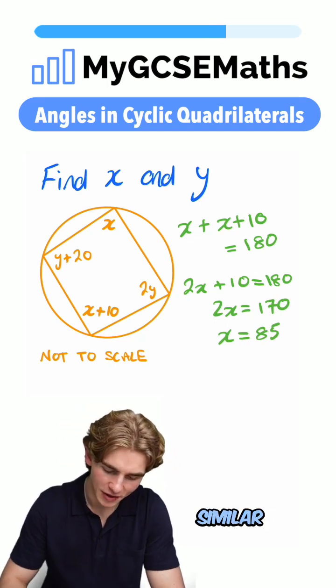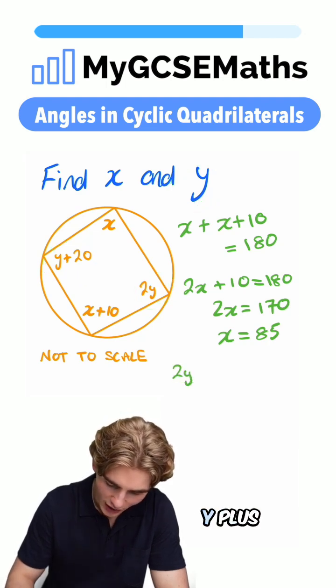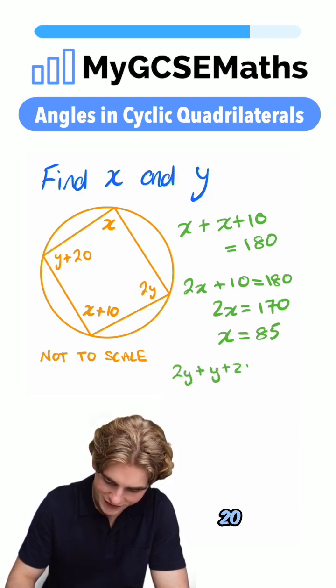We can do a very similar thing for y. We can say that 2y plus y plus 20 is 180, so we have 2y plus y plus 20 equals 180.